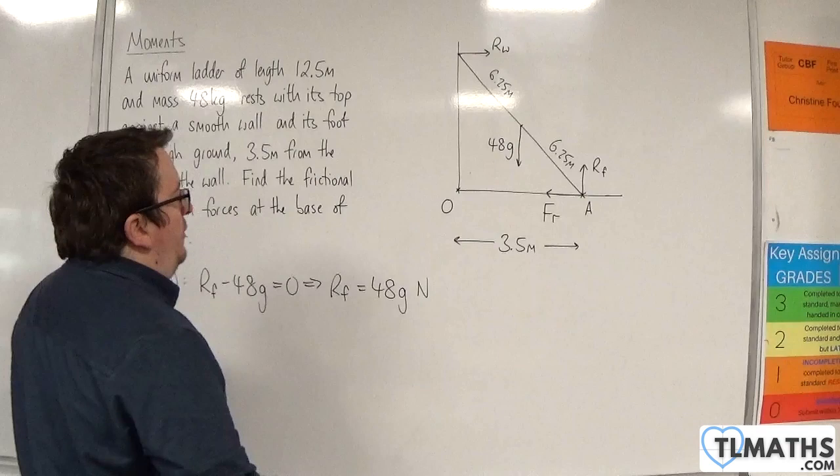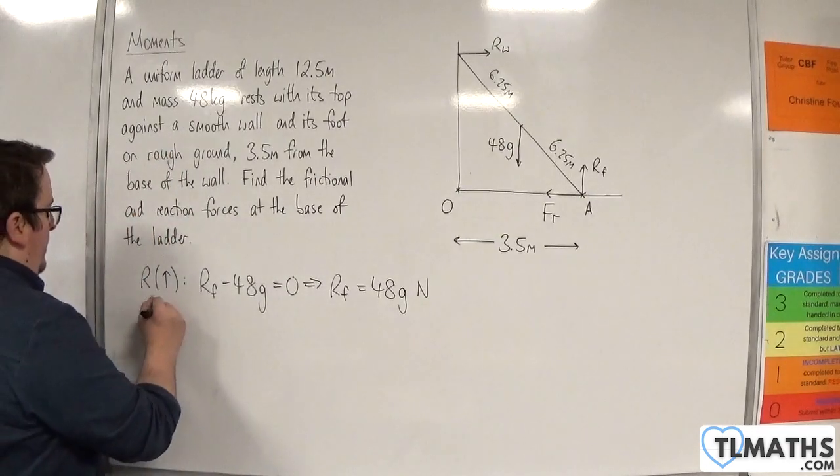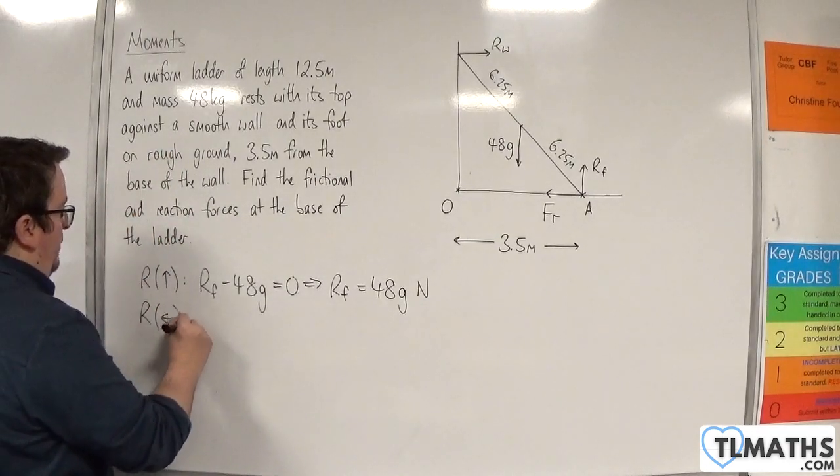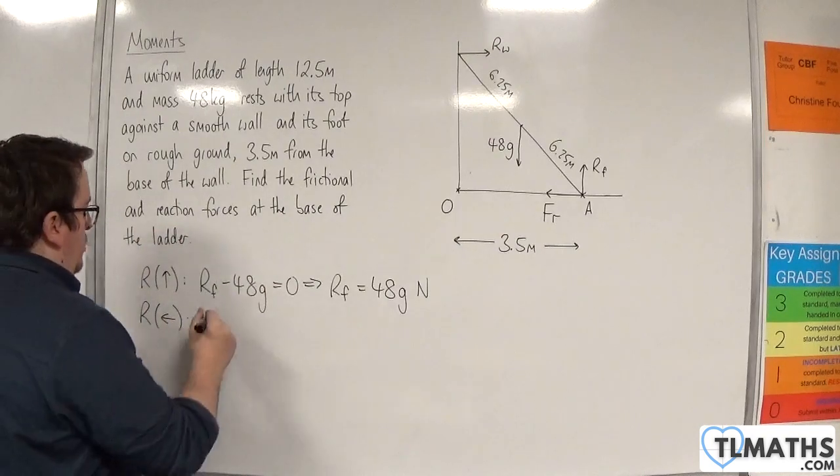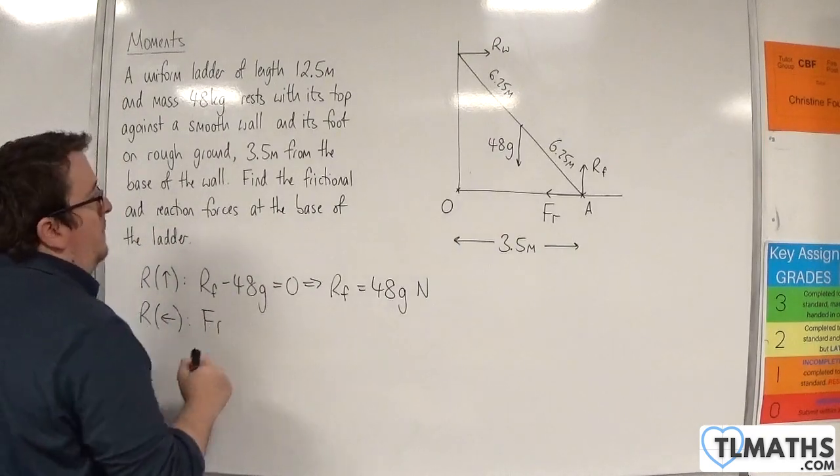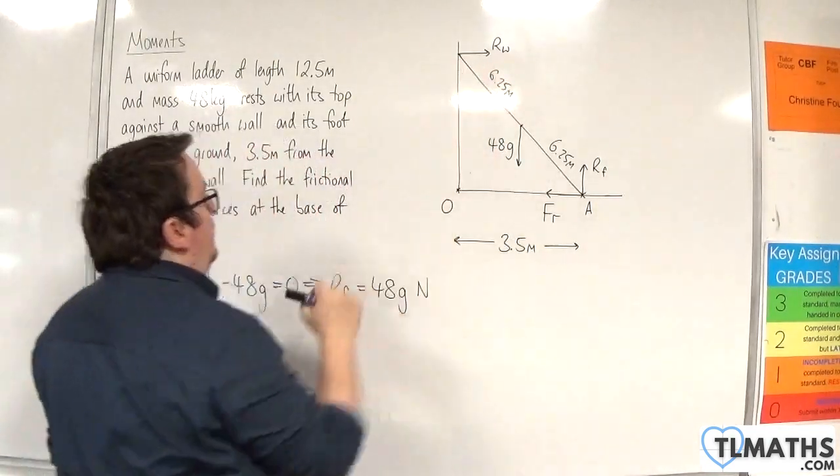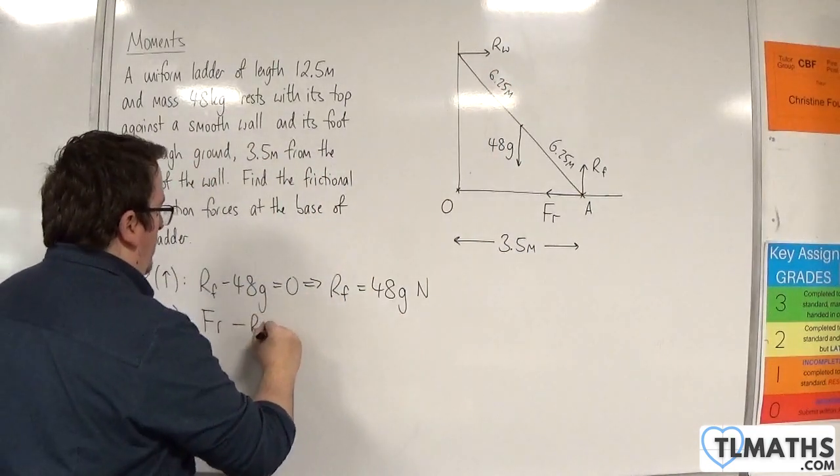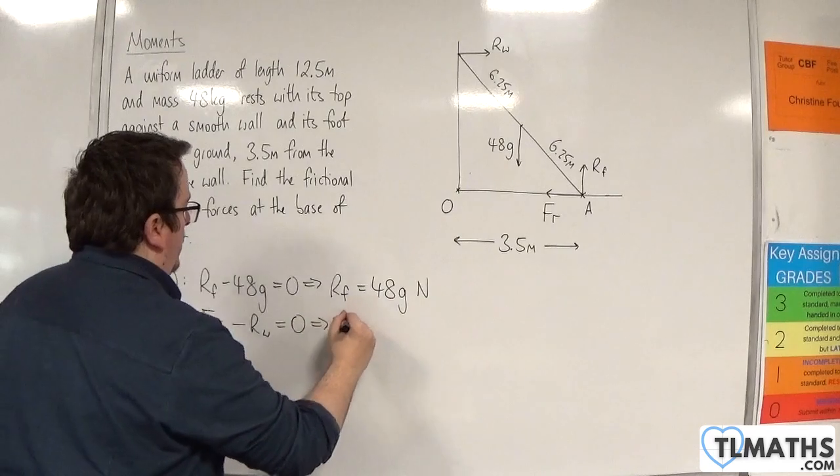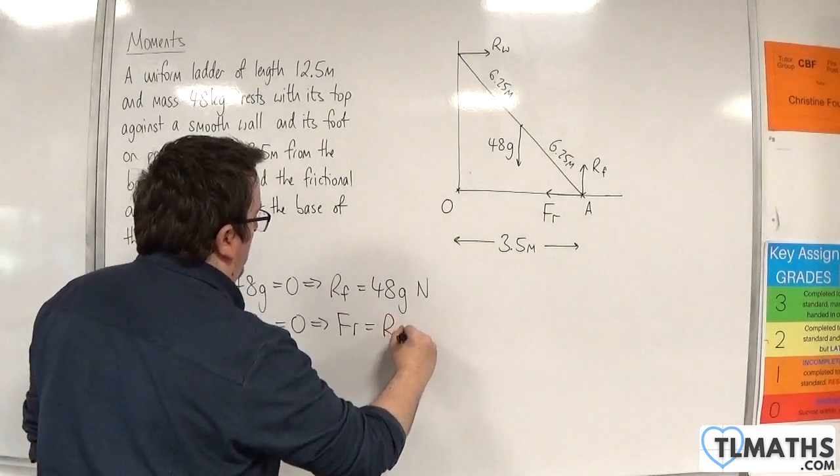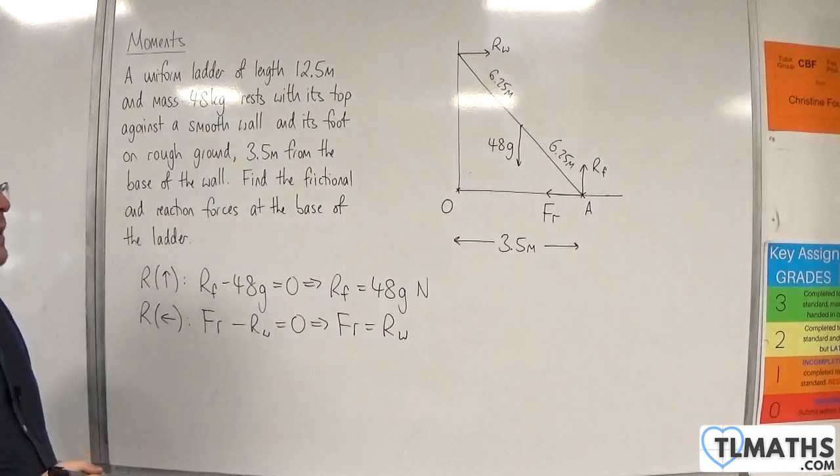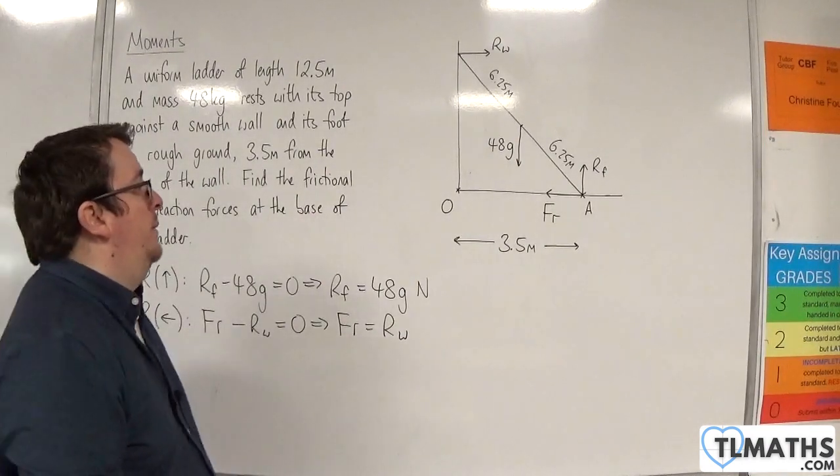Right, let's resolve horizontally next. I'm going to take to the left as positive, because I want to find the friction. So the friction is going to the left, but going to the right is Rw, so take away Rw is 0. So that means that the friction is equal to Rw, whatever that is. So we now need to work out what Rw is.